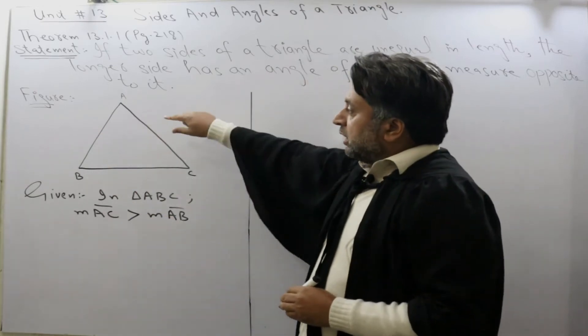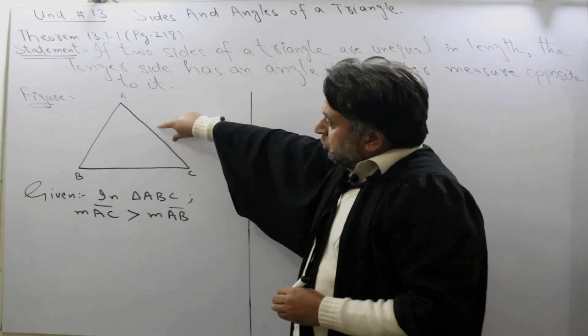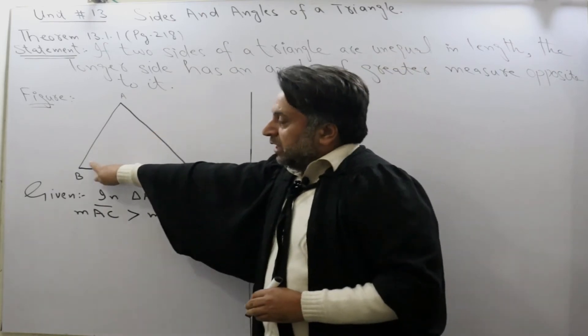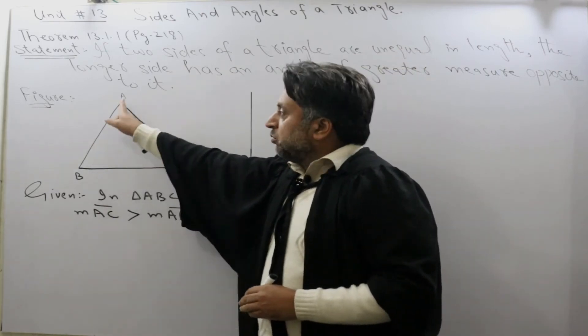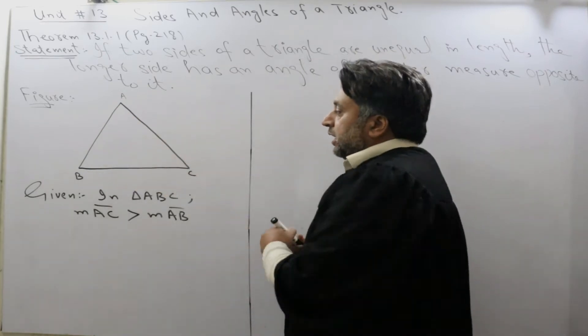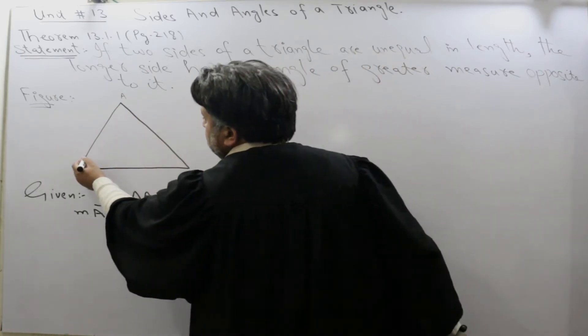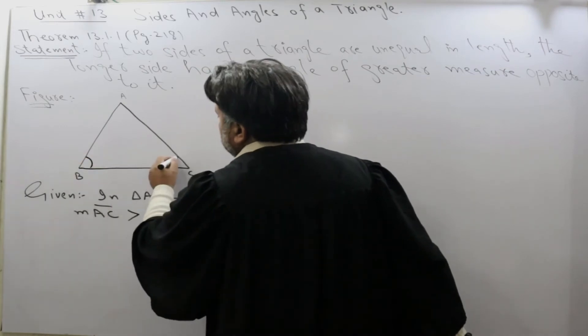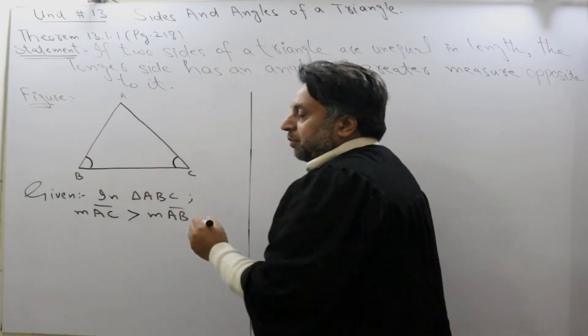We need to prove that the opposite angle will be bigger as compared to the opposite angle. It means that angle B is greater than angle C. We need to prove that angle B is greater than angle C.